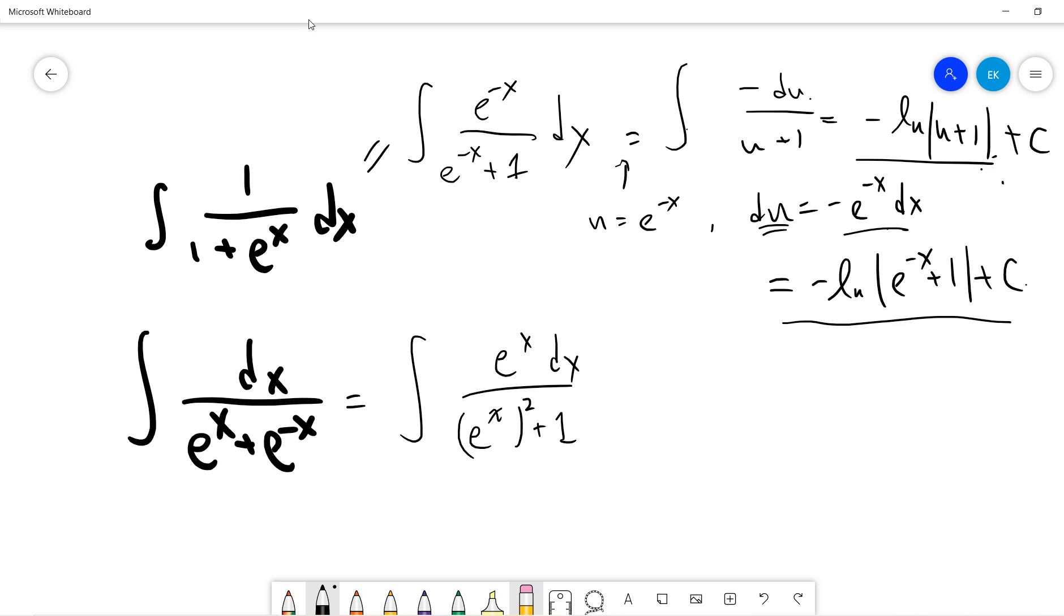So we just let u equal to exponential x, so the answer will be u squared plus one, and the du is exponential x dx, so du. So this is the arctangent, plus C. So the answer is arctangent of exponential x plus C.